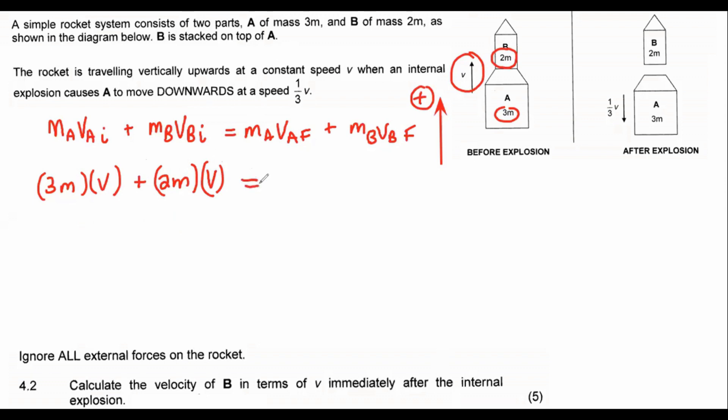And then on the other side, we've got the mass of A, which is 3m. Now here's where you have to be careful. Look what they're saying here for A. They're saying that it's going to move downwards with a velocity of a third v. So we chose upwards as positive, but it's going to move down. So we say minus a third v. And then we go plus, mass of B, which is 2m times by its velocity, which we don't know. That is what the question is asking us to calculate. We don't know what this part is over here.